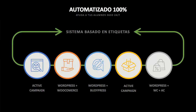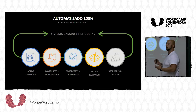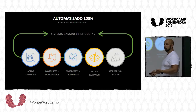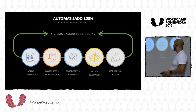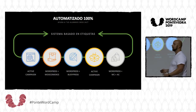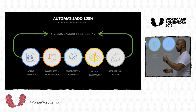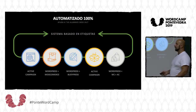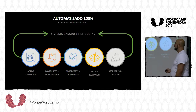Si lo basamos en plugins o aplicaciones que usaríamos para desarrollar esto, yo ahora mismo recomiendo — hay opciones totalmente gratuitas o casi gratuitas, pero estas que os pongo algunas son de pago. Sería ActiveCampaign para el email marketing, WordPress más WooCommerce para el pago y la entrega del producto. Un WordPress más BuddyPress podría ser para el soporte, la red social. ActiveCampaign también o un plugin de tickets para soporte. ActiveCampaign para todo el tema de fidelización. Y WordPress más WooCommerce más ActiveCampaign, que sería el volver otra vez a la rueda.